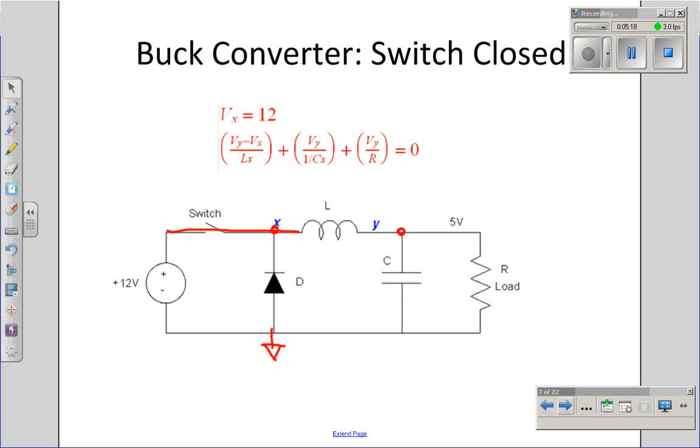The second equation would be at the right side, Vy. Set the three currents to 0. The current to the left, Vy minus Vx over Ls, plus the current going through the capacitor, Vy over Cs, plus the current through the resistor must add to 0. That's the differential equation that tells the output voltage when the switch is closed. What it's going to look like is something like this: I'm charging the output up to 12 volts.